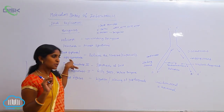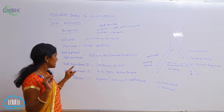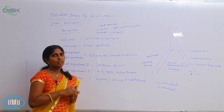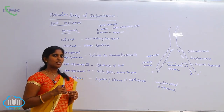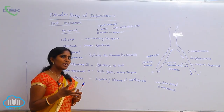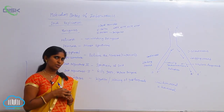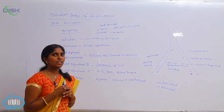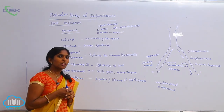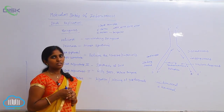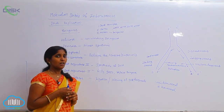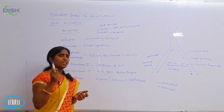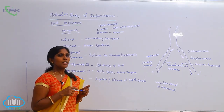DNA gyrase is also called a topoisomerase enzyme. The next enzyme is DNA polymerase. DNA polymerase is responsible for polymerization — making the polymer of deoxynucleotides. Different types of polymerases are involved: in prokaryotes, DNA polymerase I, II, and III work, whereas in eukaryotes, different types work — alpha, beta, gamma, delta, and epsilon DNA polymerases.